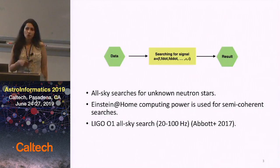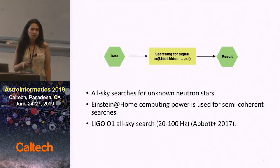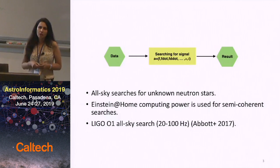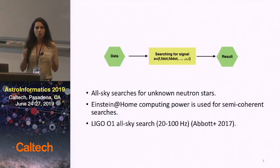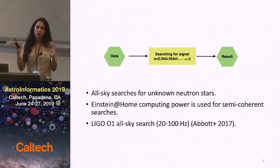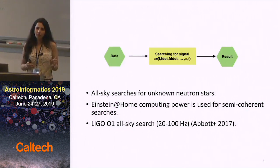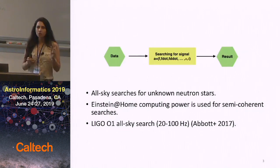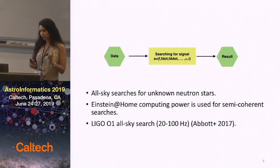The data I'm showing here is from LIGO O1, an all-sky search for 20 to 100 Hz. Instead of looking at the whole frequency range at once, we divide it into 50 millihertz bands and look at each of these 50 millihertz bands of data to search for a gravitational wave.